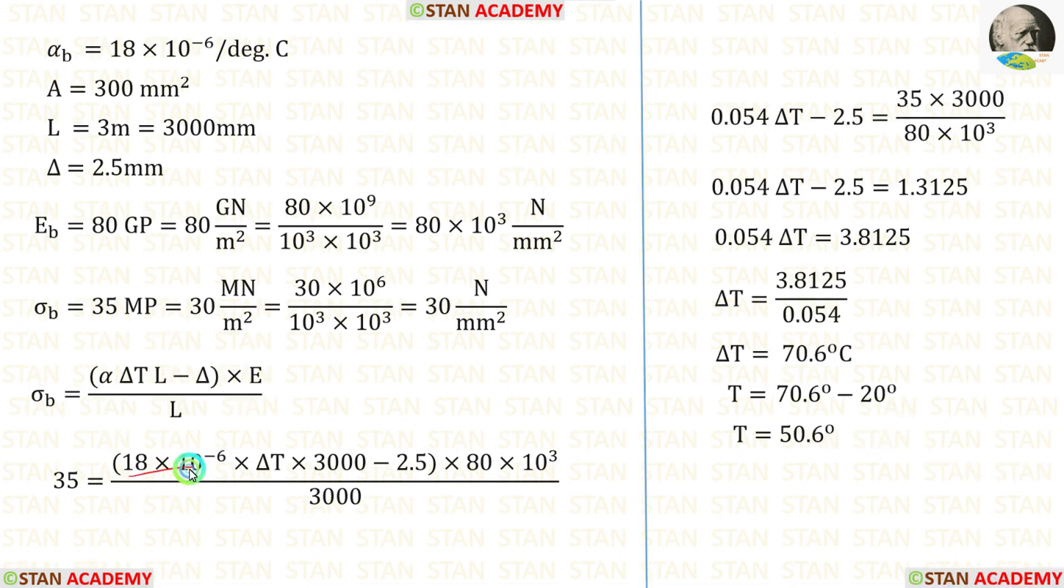When we multiply this and these, we will get 0.054. We can take these two terms on the other side. They will come inversely. In this way we can find delta T. Finally, we can get the temperature by subtracting 20 degree. We are getting the temperature as 50.6 degree.